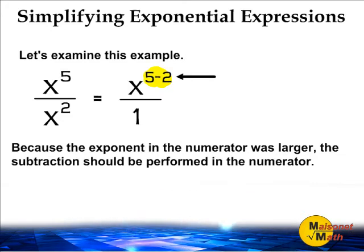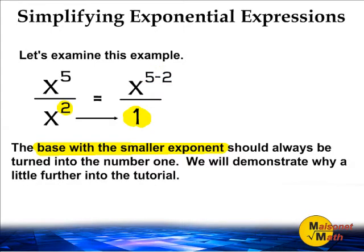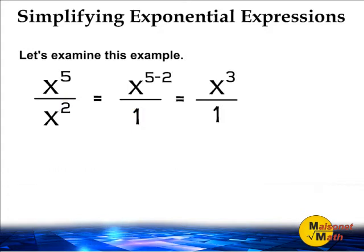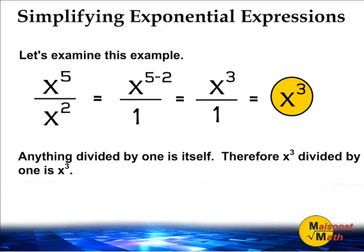Because the exponent in the numerator is larger, the subtraction should be performed in the numerator. The base with the smaller exponent should always be turned into the number one. So on the top, we have x to the third power being divided by number one on the bottom. This may be simplified further to x to the third power, because anything divided by one is itself. Therefore, x to the third power divided by one is x to the third power.